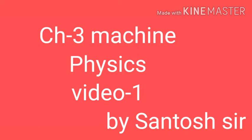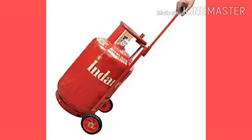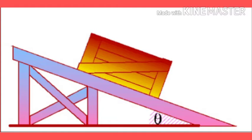Welcome back, students. Today we will see Chapter 3, that is 'Machine.' We have seen live examples where I tried to lift the cylinder of our house with the help of a trolley — that trolley is a machine. Similarly, to shift a heavy load from a lower region to a higher region, we use an inclined plane, which is also a machine.